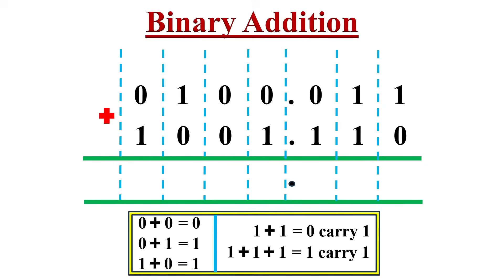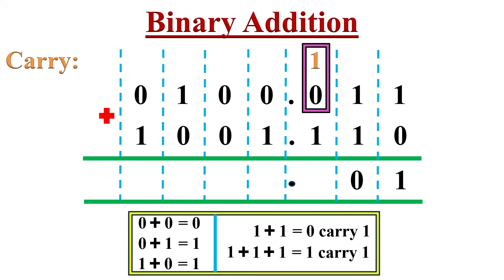First, add the rightmost column numbers: 1 plus 0 equals 1. Then in the next column, we add two 1s, which equals 0 with carry 1 to the next column. In the next column, we have to add 1 plus 0 plus 1 — here 1 plus 0 equals 1, so it is nothing but 1 plus 1 — giving answer 0 with carry 1 to the next column.